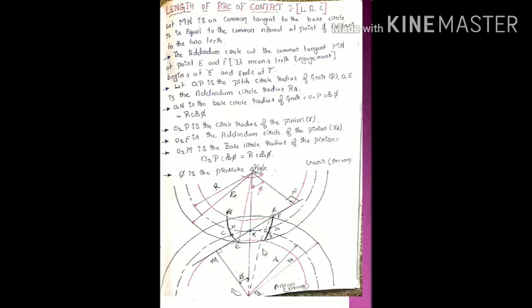We are deriving the length of contact by considering these two types of gears: the upper one is the gear and this is the pinion; the gear is the driven member and the pinion is the driver. The red color circle is the addendum circle for the pinion and for the gear, the center one is the pitch circle. Now, MN is the common tangent to the base circle.